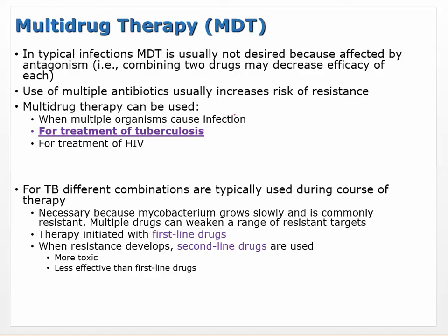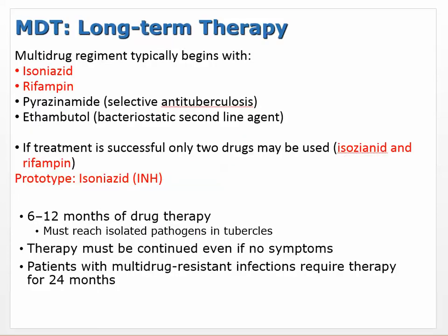Multidrug therapy can be used when multiple organisms cause infection. The cases we care about are treatment of tuberculosis and HIV. For TB, different combinations are typically used during the course of therapy because mycobacterium grows slowly and is commonly resistant. Multiple drugs can weaken a range of resistant targets. Therapy is initiated with first-line drugs; when resistance develops, you switch to second-line drugs.